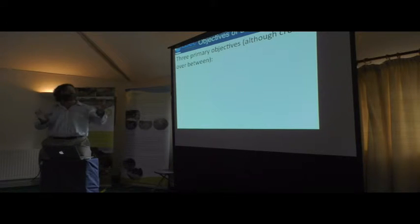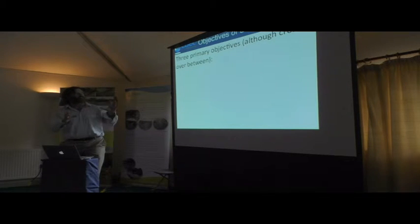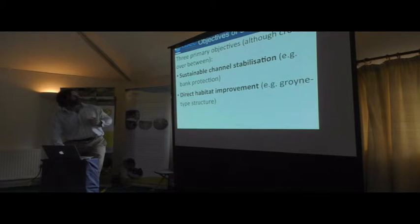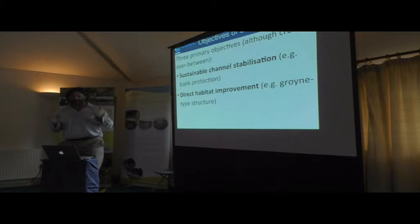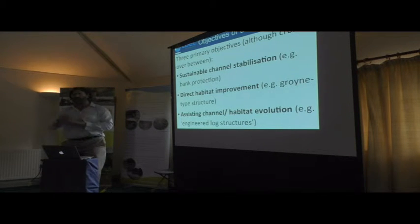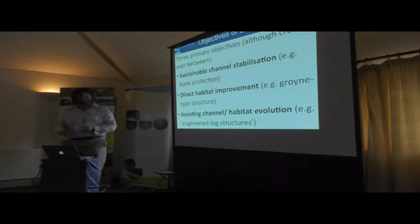I'm going to put the use of wood into three general objectives of why you use it, although there is a lot of crossover. Perhaps the most obvious is for sustainable channel stabilisation, for instance bank protection. But also there is direct habitat improvement — you can put these structures in very simplistic engineered channels to provide diversity and additional habitat. And a follow-on from that is not just providing direct habitat but kick-starting the evolution of the channel. Wood is very important at driving physical change in channels and providing the physical diversity that animals need.